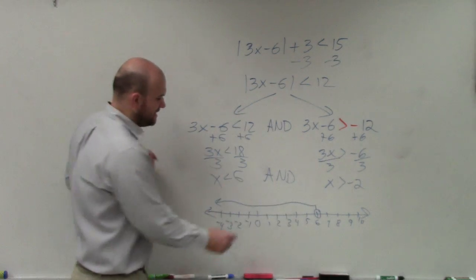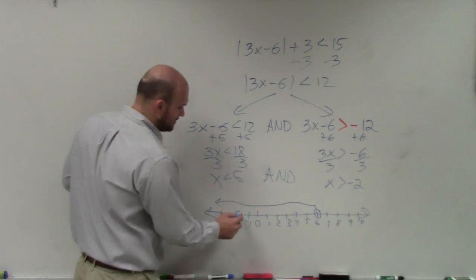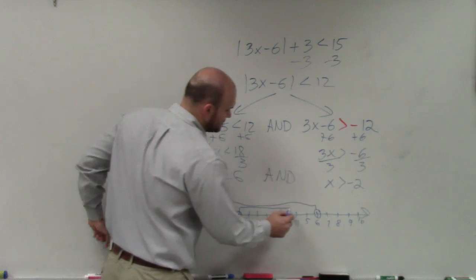Then I have x > -2. So I go to negative 2. Again, since it's greater than, that's an open circle.